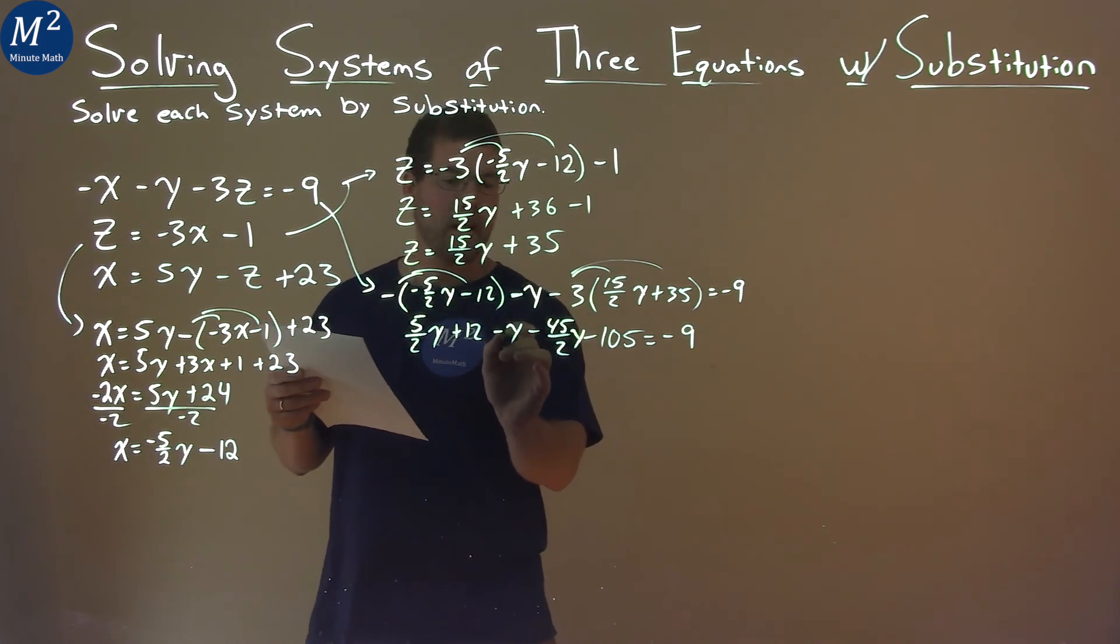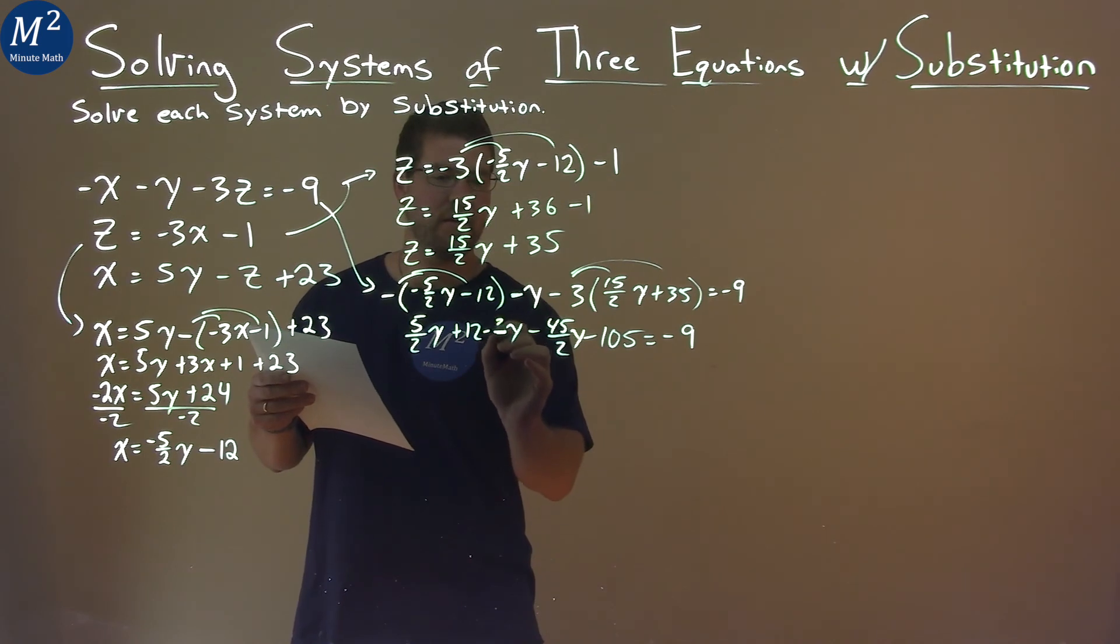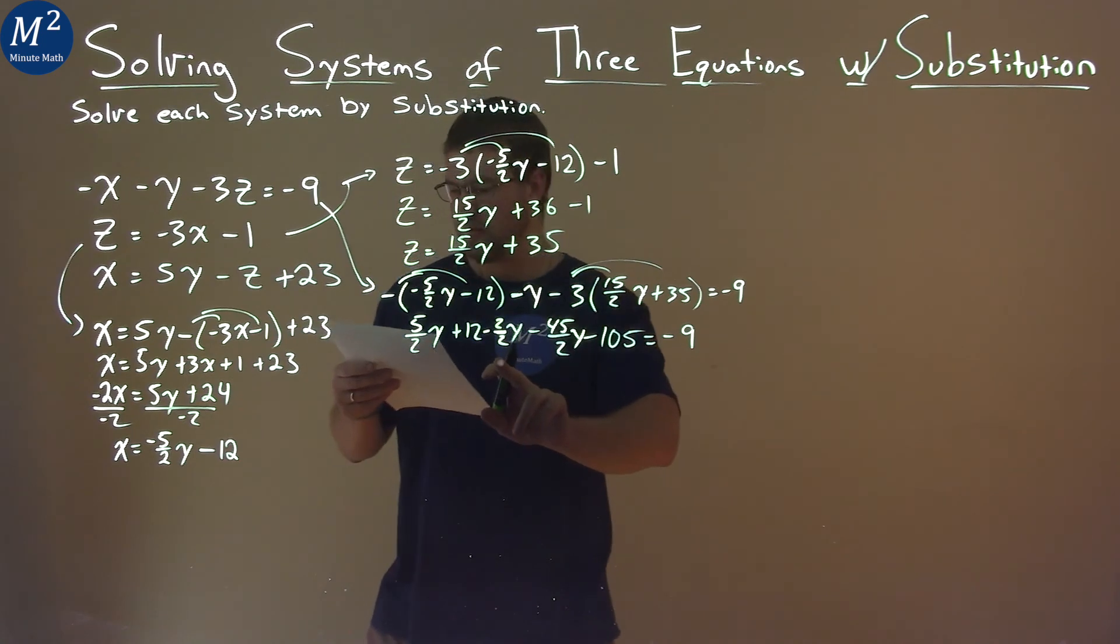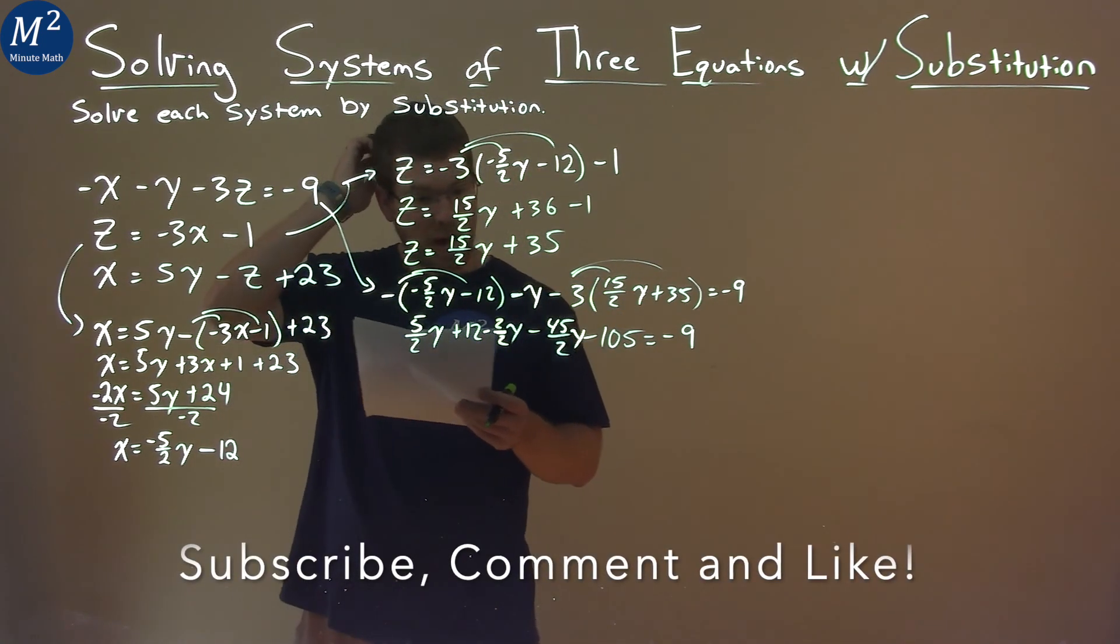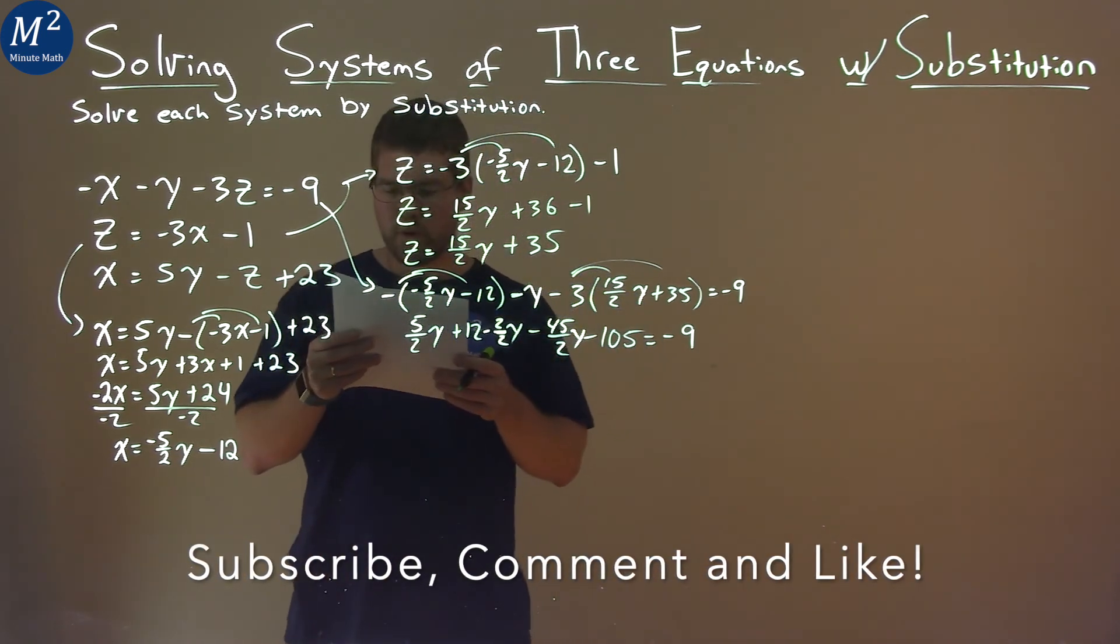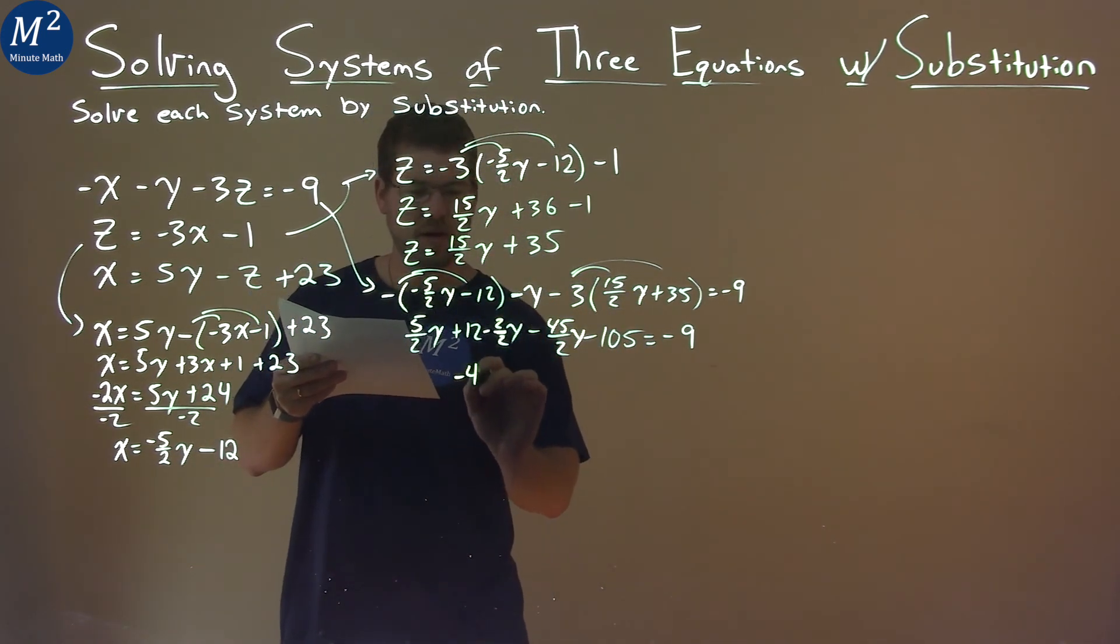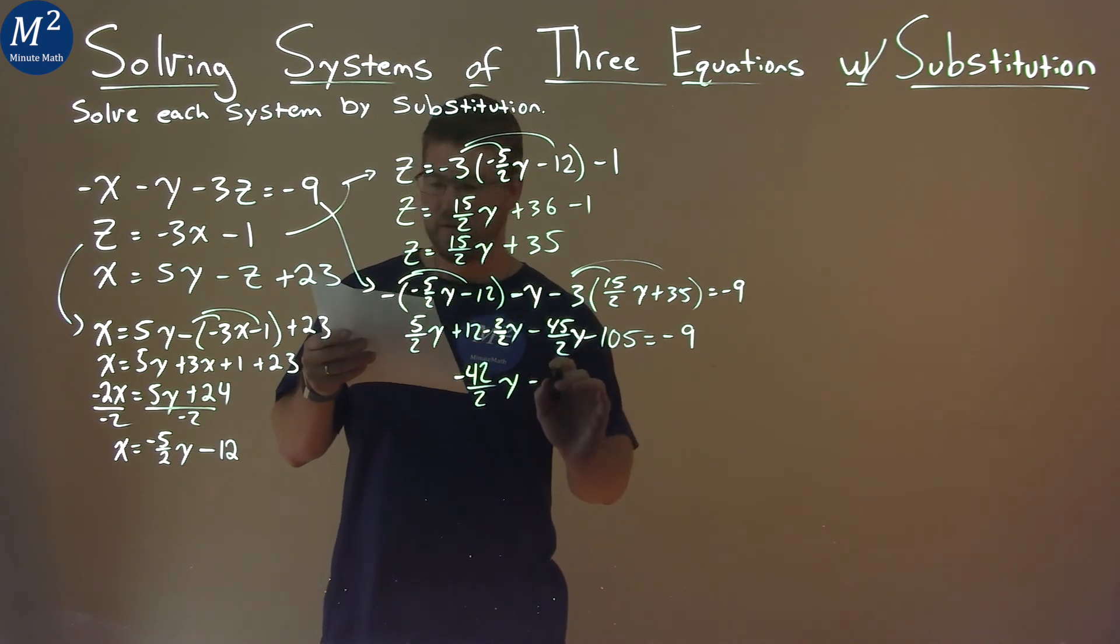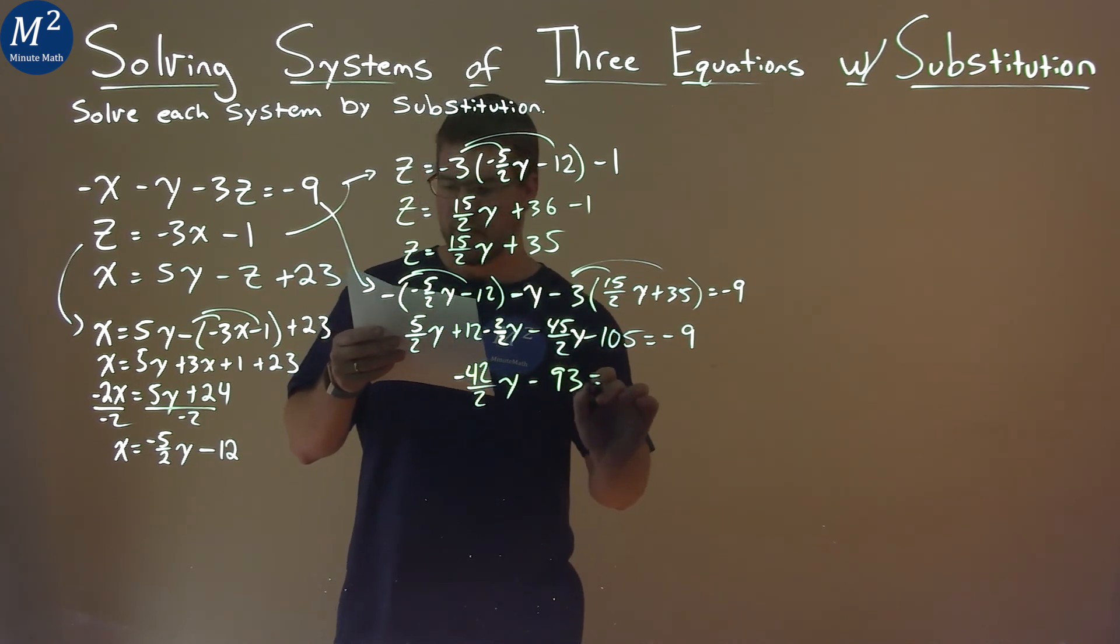Notice here that this minus y doesn't have a 2 in the denominator, but these two do. So if you want to put a minus sign here, 1 is the same as 2 over 2. Now it's easier to see we can add our like terms. 5 halves minus 2 halves, which is 1, minus 45 halves comes out to be negative 42 halves y. Then 12 minus 105 is minus 93, and that equals negative 9.